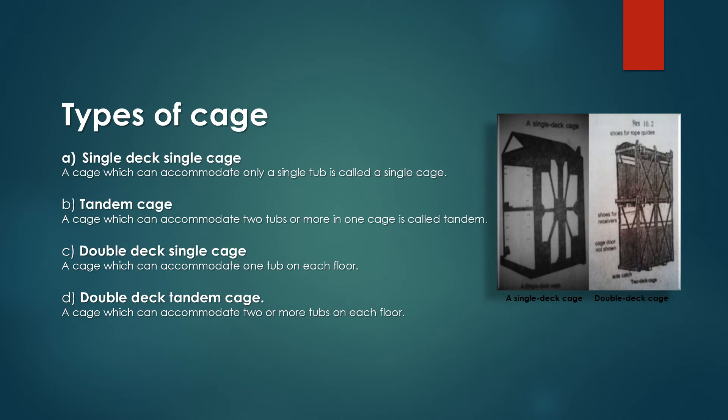Tandem cage. A cage which can accommodate two tubs in one cage is called tandem.